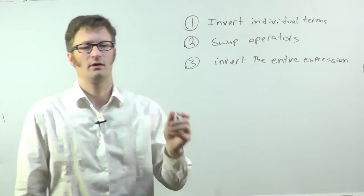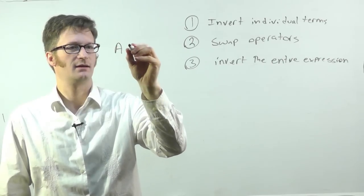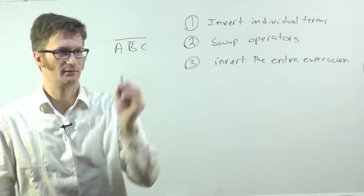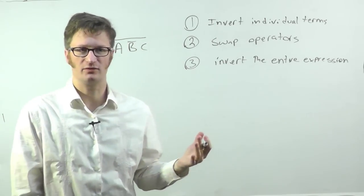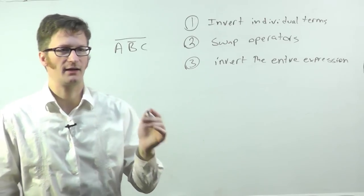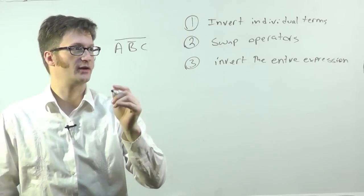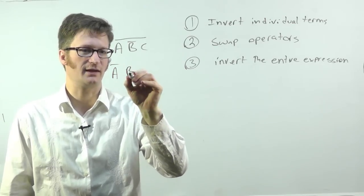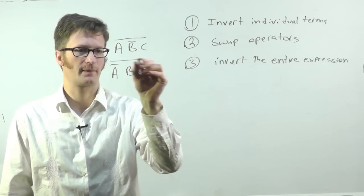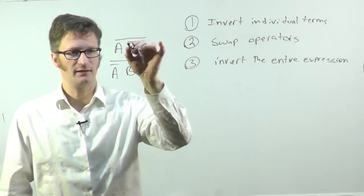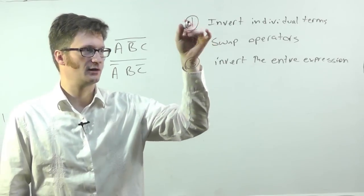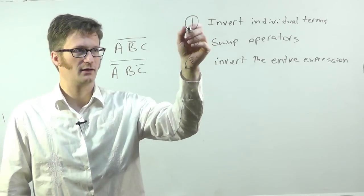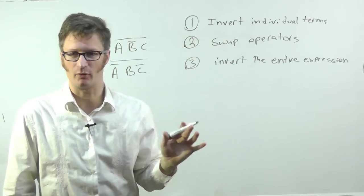Okay, so let's say I had A B bar C and the whole thing is barred. If I want to change this into another form, I can say, all right, the first one is I'm going to invert the individual terms. So I get A bar B C bar. And these two are not equivalent. Only the first or the zeroth step and the third step will be equivalent. These are intermediate steps that won't be equal.